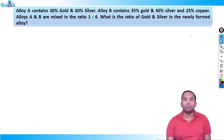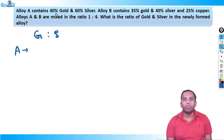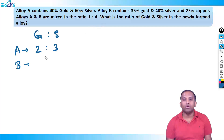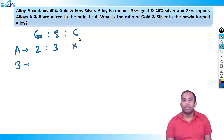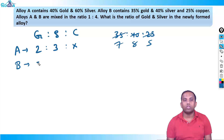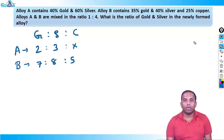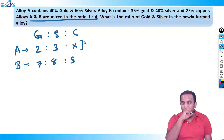Alloy A contains 40% gold and 60% silver — so the gold:silver ratio is 2:3, and there is no copper. Alloy B contains 35% gold, 40% silver, and 25% copper — so the ratio is 7:8:5. Now, what is the ratio of gold and silver in the newly formed alloy if A and B are mixed in the ratio 1:4? Before solving, check if the parts are already in ratio 1:4: alloy A has 2+3=5 parts and alloy B has 7+8+5=20 parts, giving 5:20 = 1:4. Already satisfied!